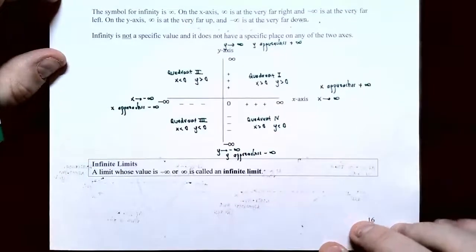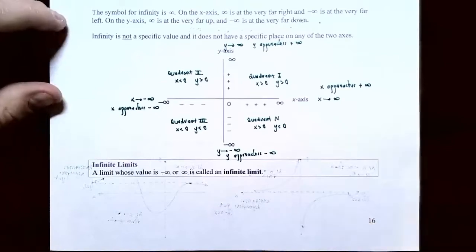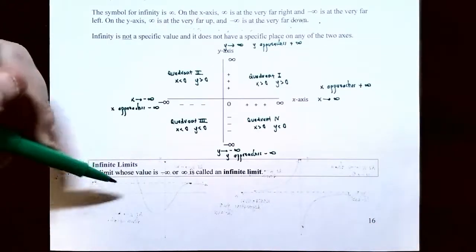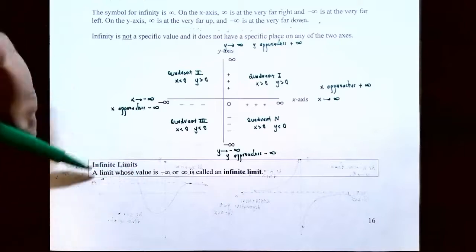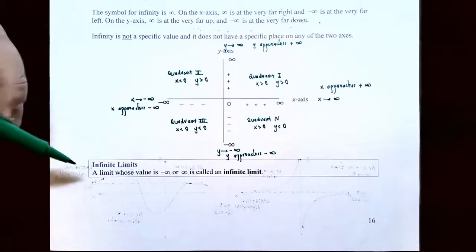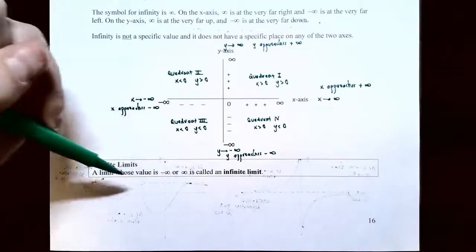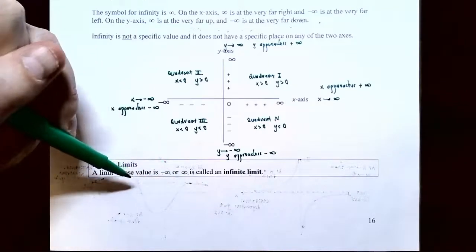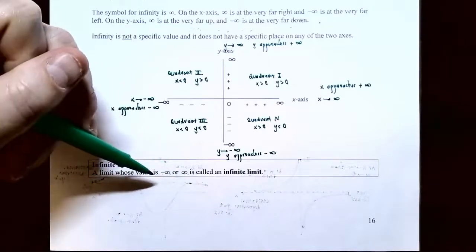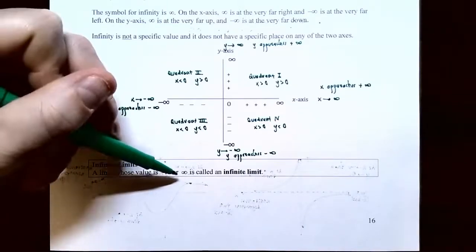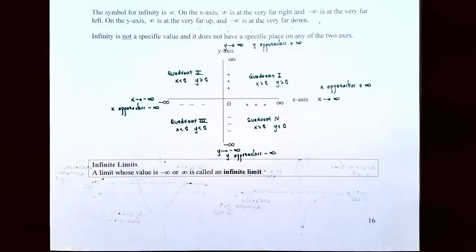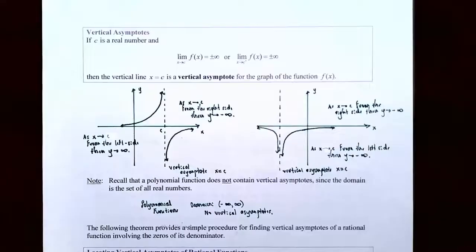An infinite limit is a limit whose value — that is, the y values — is either negative infinity or positive infinity. So if the y values are approaching negative infinity or the y values are approaching positive infinity, this is called an infinite limit.